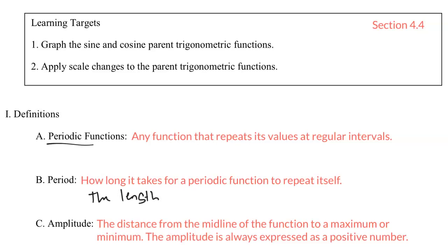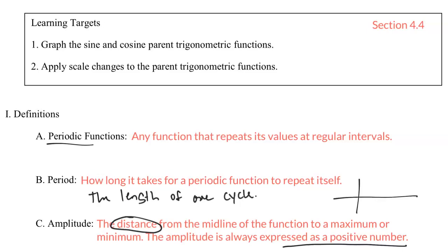However long it takes for those y values to repeat, that would be the period. The amplitude is the distance from the midline of the function to a maximum or a minimum. The word distance implies that amplitude is always positive. Looking at a quick picture of a sine function, the midline cuts the function in half vertically, and the amplitude is the distance from the midline to a max or a min — we call that capital A.